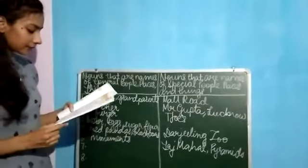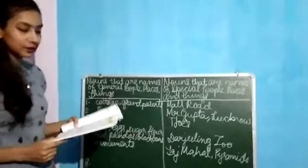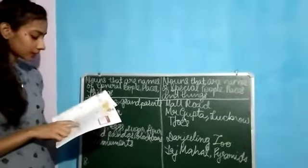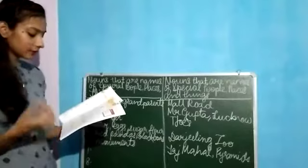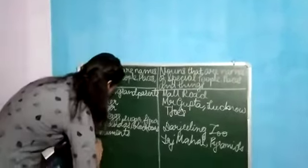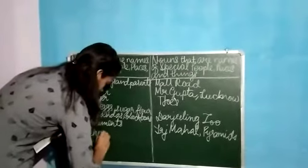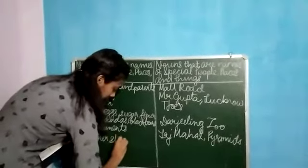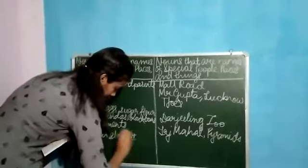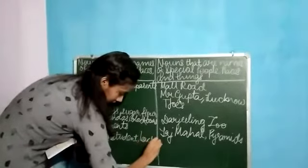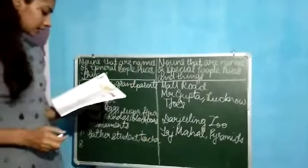Number 7. The father of the student came to meet the teacher. So all these are common nouns. It could be any father, any student, any teacher. So father of the student came to meet the teacher.